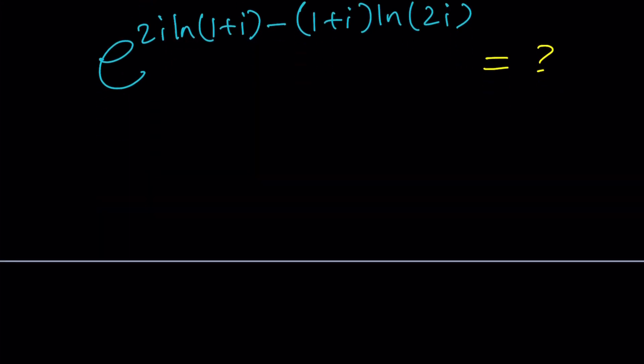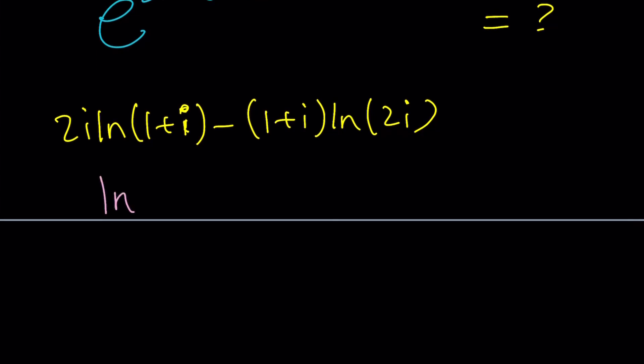but don't worry. We're going to focus on the exponent first. So let's talk about the natural log of a complex number. In the real world, you cannot ln a negative number. You can't ln 0. But in the complex world, you can ln negative numbers. You can even ln numbers that are imaginary or complex, like ln(1 plus i) is defined.